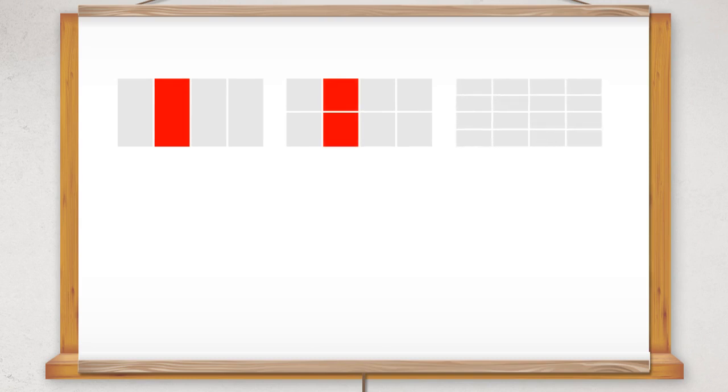Looking at the pictures of the rectangles in the next example, we can see that one quarter is equal to two eighths, which is equal to four sixteenths.